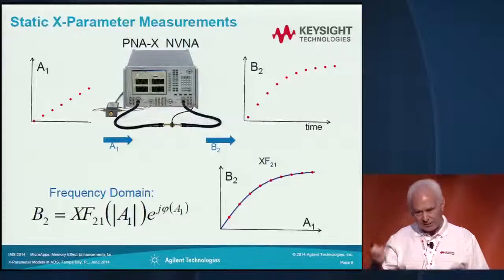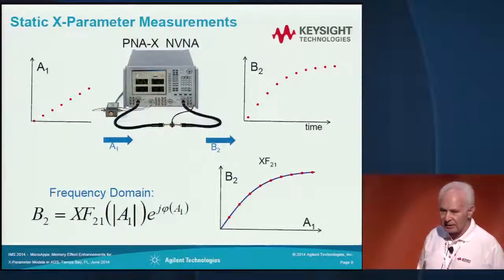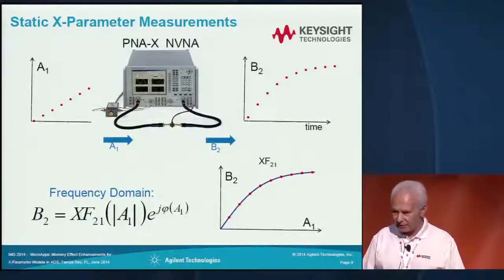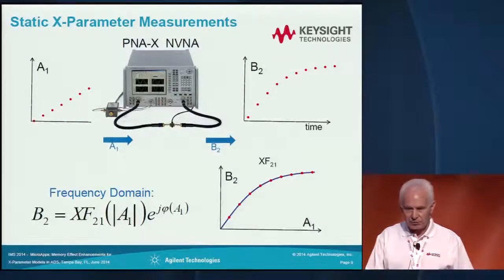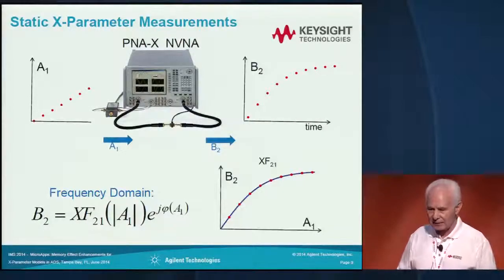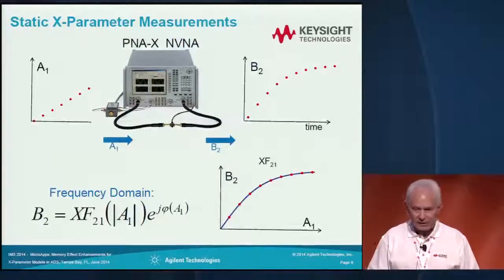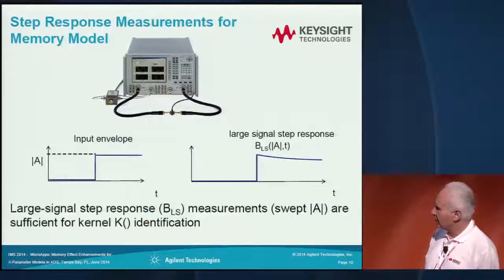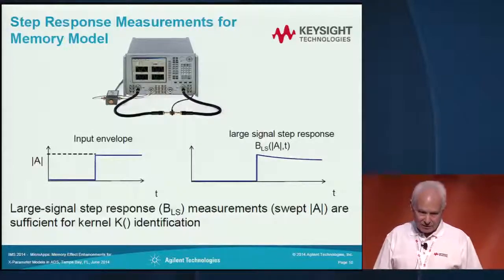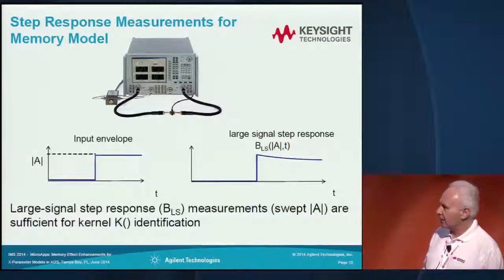To characterize static X parameters, the DUT is excited at an input port with CW signals. It should be excited under many power levels to be able to account for various nonlinearities. What is measured are the reflected or scattered waves at all ports and all harmonics or spectral components. For memory effects and history, we need some transient information, which can be captured with what we call the large signal step response.